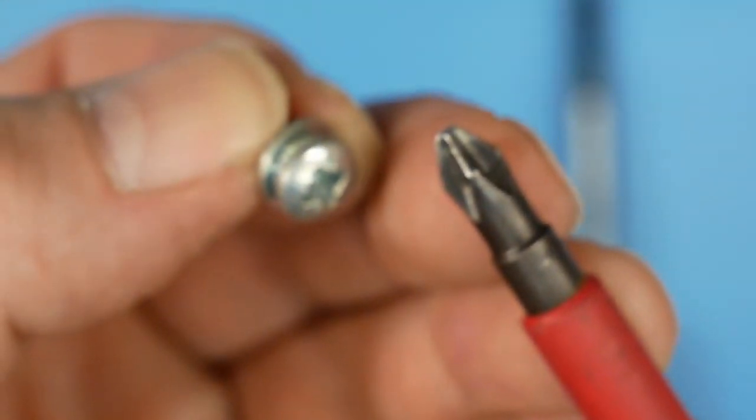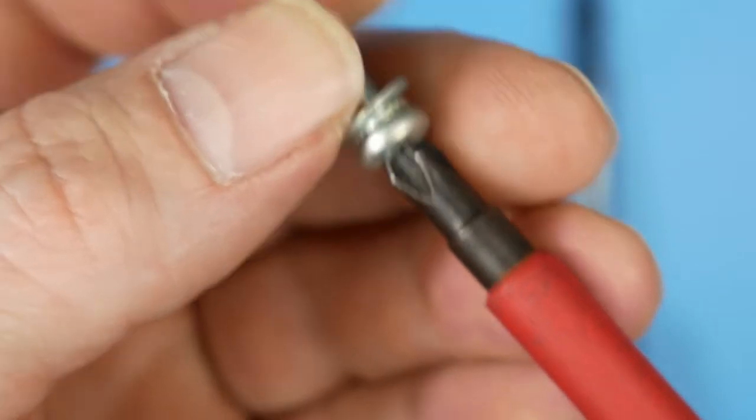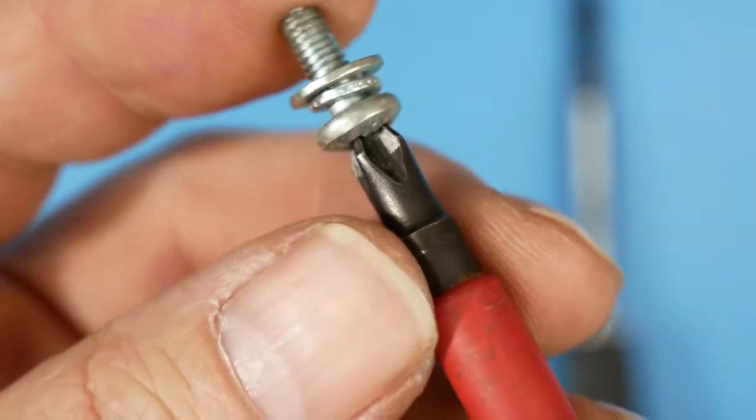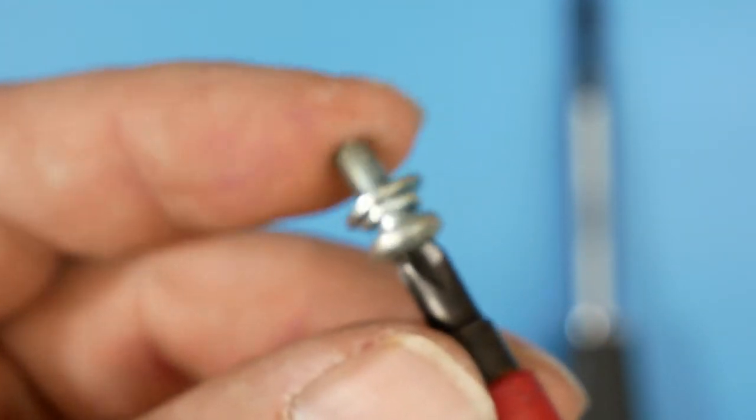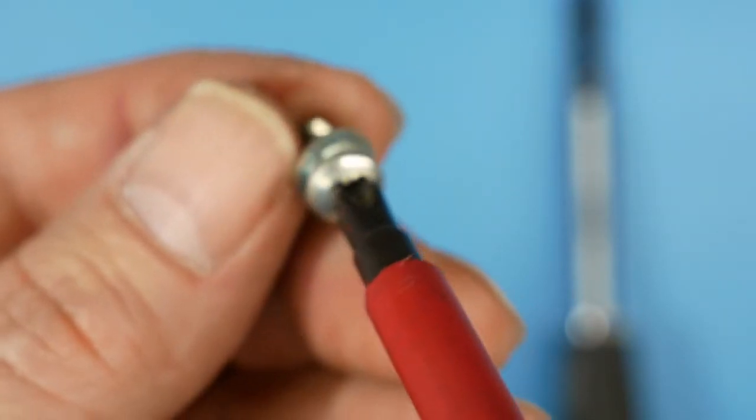Just to give you for instance, this is a Phillips, that's a Posi Drive. It just kind of wiggles, it doesn't seat properly at all.